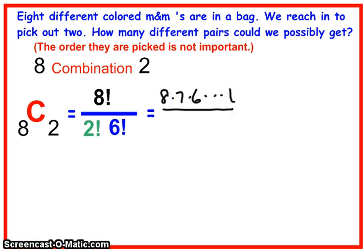2 factorial would be 2 times 1, and 6 factorial would be 6 times 5 times 4, all the way down to 1 in the multiplication.